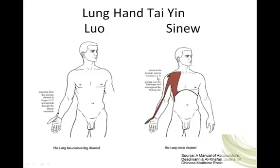We see our sinew channel. Sinew channels are important because they bring nourishment — qi and blood — to the muscles, to the surface.